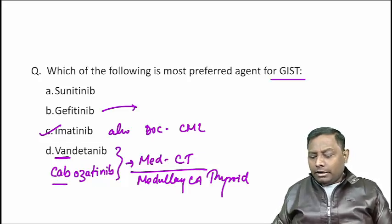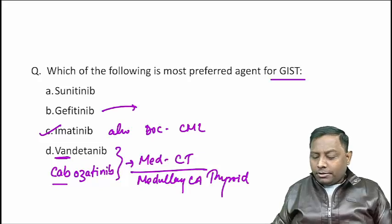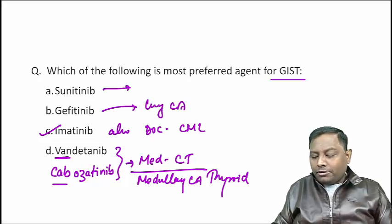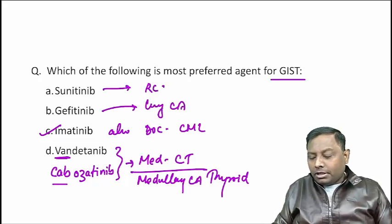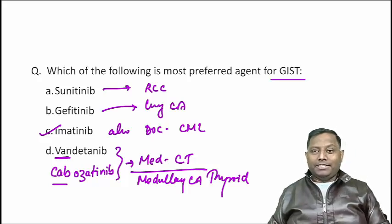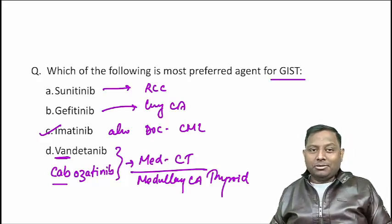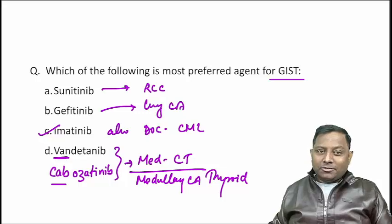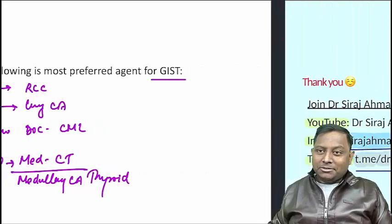Gefitinib is mainly used in lung cancer. Sunitinib can be used in renal cell carcinoma — it is a VEGFR inhibitor used in that setting. So the correct answer for GIST is imatinib mesylate.